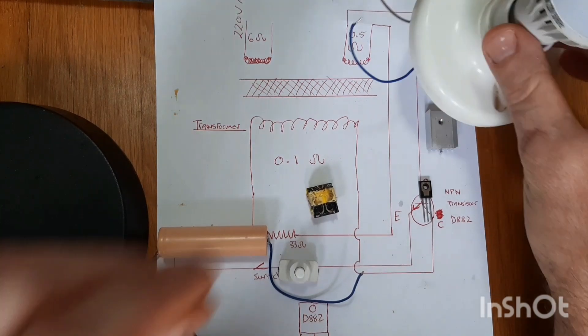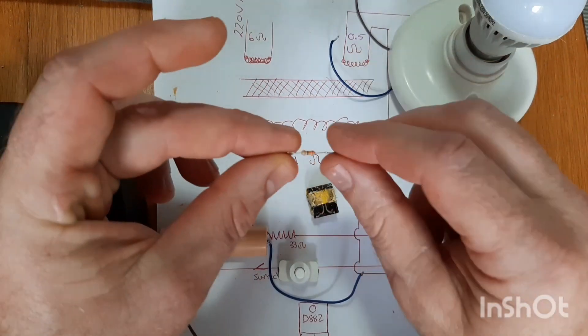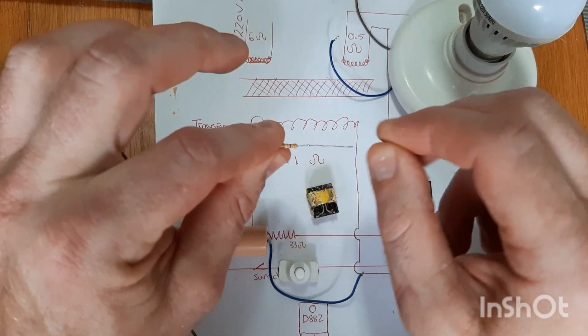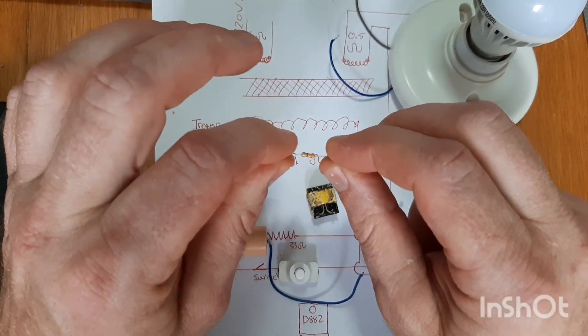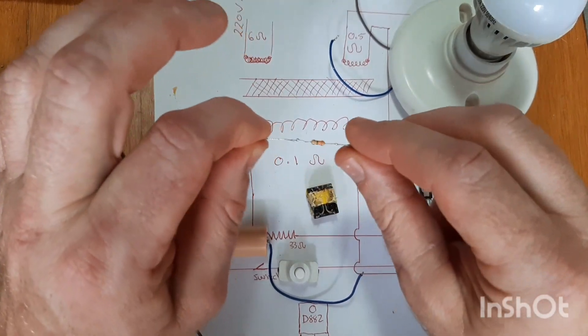One more thing. We need a 33 ohm resistor. So let's put all these ingredients together and see what inverter we can make.